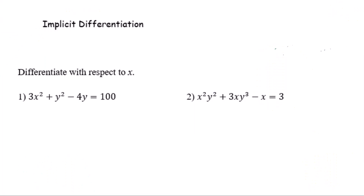This video is about implicit differentiation. When it's hard to get y equals, you need to think about implicit differentiation. For example, 3x² plus y² minus 4y equals 100. We want to figure out dy by dx. Since it's hard to isolate y, you need to use implicit differentiation to solve this problem.